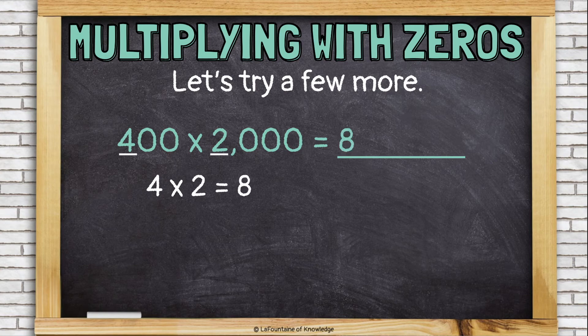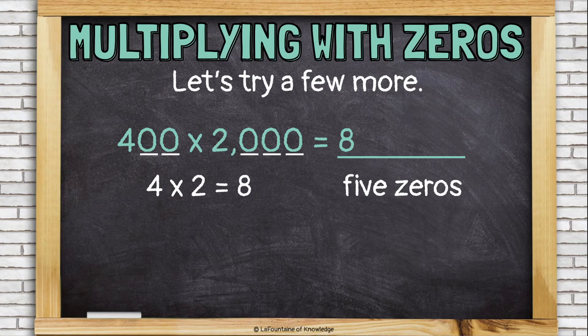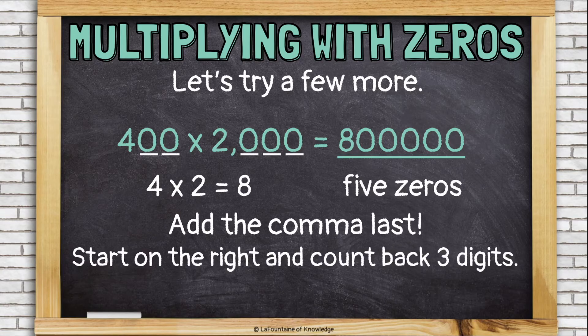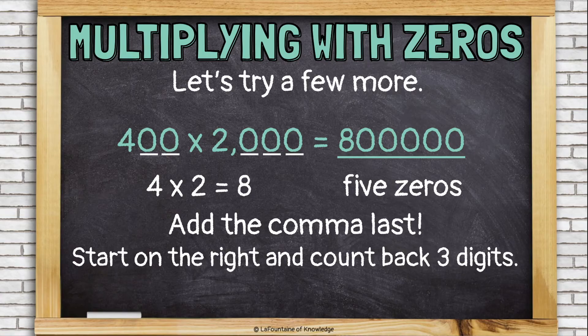Now, how many zeros are in my problem? Five zeros. So I'm going to add five zeros after the 8. And finally, I'm going to add the comma using that strategy where I count back from the right, three digits. That's where the comma goes. And I can see that my answer is 800,000.